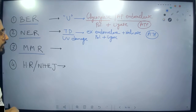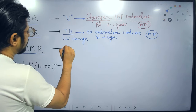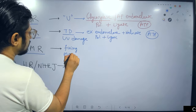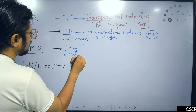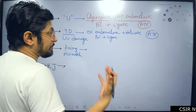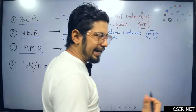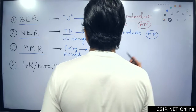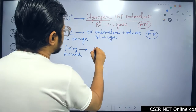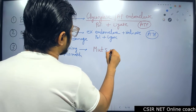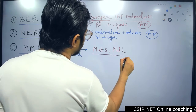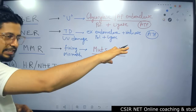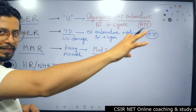Moving to Methyl Mismatch Repair — this fixes mismatches like A paired with C or G paired with T. To fix the mismatch, we need specific proteins known as MutS and MutL, among several other proteins. Their detailed functions will be covered in the DNA Mismatch Repair video.